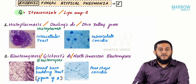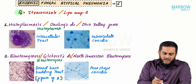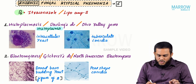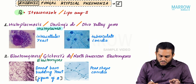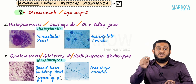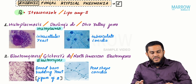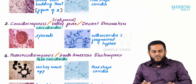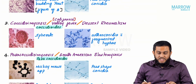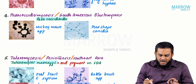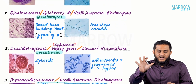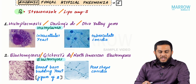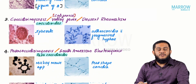Endemic fungal atypical pneumonia is caused by five fungi. The first two are Histoplasma and Blastomyces. The next two are Coccidioides and Paracoccidioides. The last one is Talaromyces marnefi. These are the five fungi that cause endemic atypical fungal pneumonia.